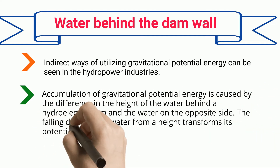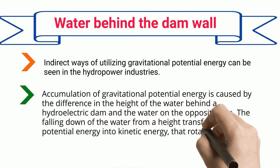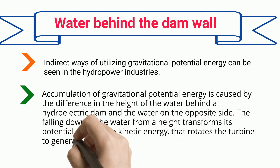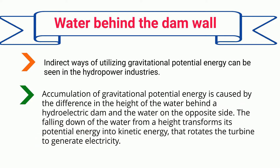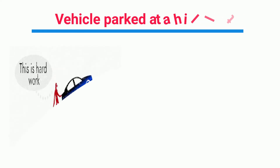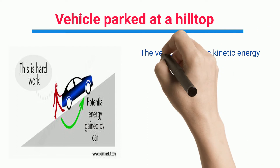The falling of water from a height transforms its potential energy into kinetic energy, which rotates the turbine to generate electricity.